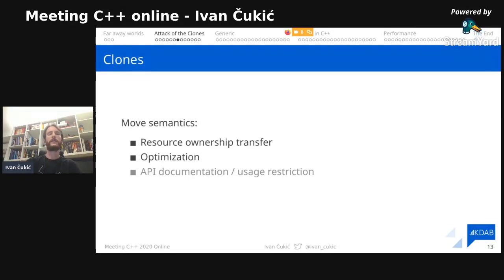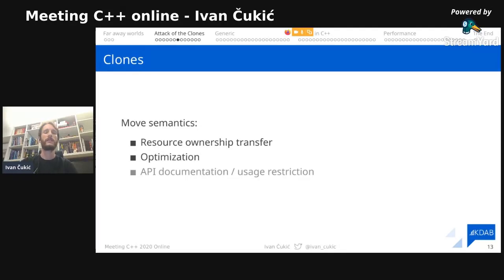When people talk about move semantics, they often talk about ownership — unique pointer, unique ownership, transferring ownership from one place to another. Move semantics are also connected with optimization because we don't need to create copies. But another important part is that by using rvalue references in your API, you're actually documenting the API and how it's properly used.